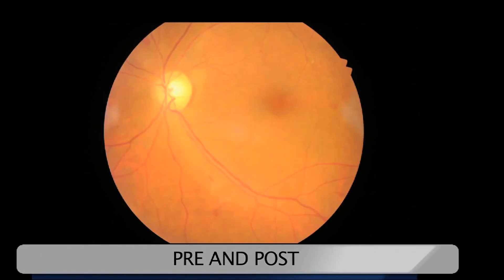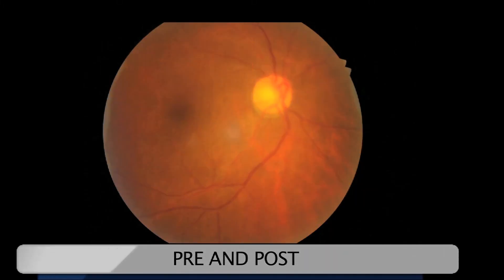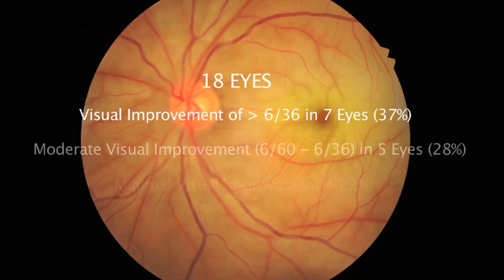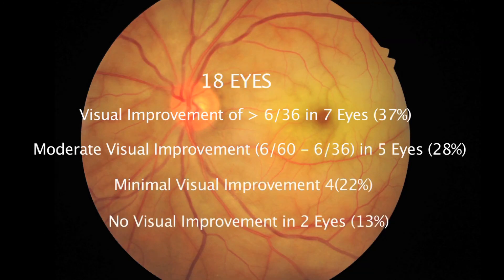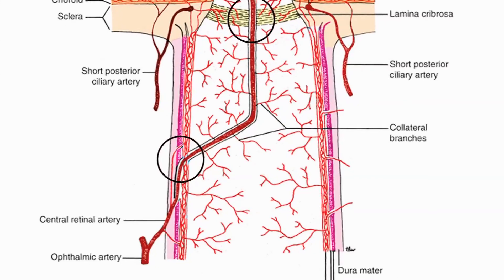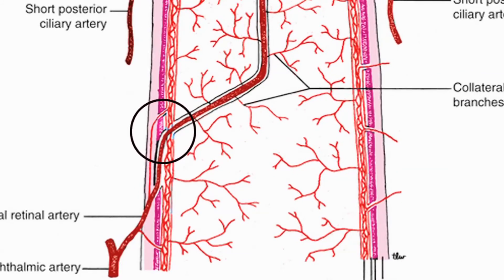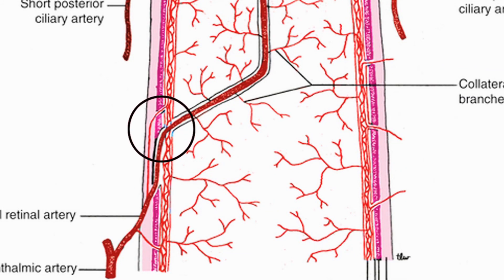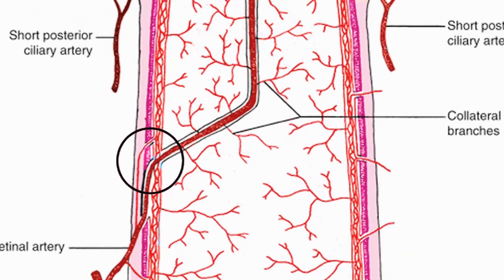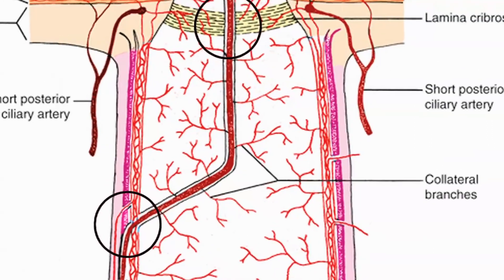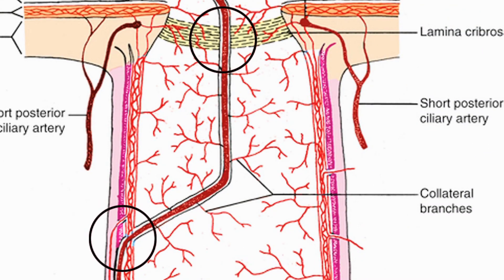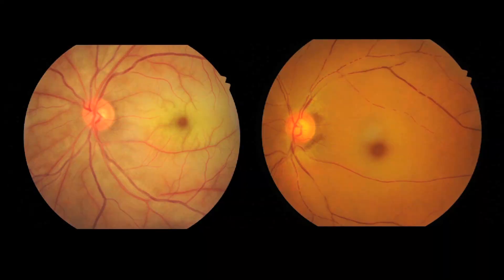Encouraged by this experience, we went ahead and performed the surgery in 18 patients with CRAO and had very positive results. We feel that if the occlusion is at the site where the central retinal artery pierces the dura, this surgery will not be beneficial. However, if the occlusion is around the lamina cribrosa, this surgery will be definitely beneficial. Unfortunately, the paucity of such cases and the urgency to treat them makes a planned study difficult.